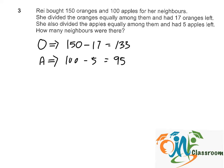So we know that she divided 133 oranges and 95 apples equally among all the neighbors. So that means we just need to find the common factor of 133 and 95 to find out the number of neighbors.